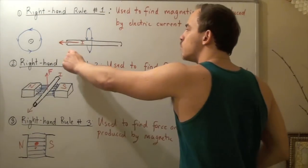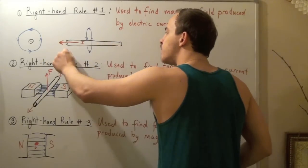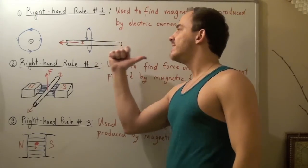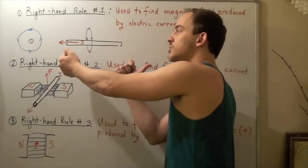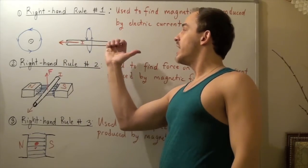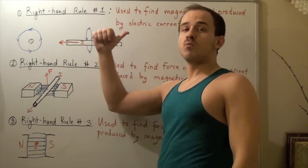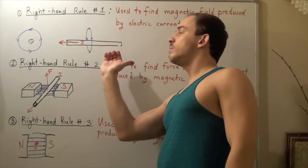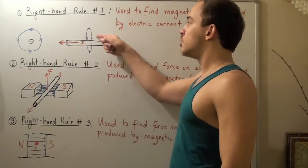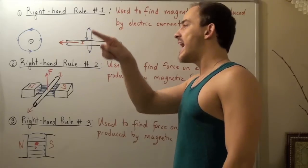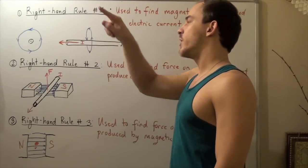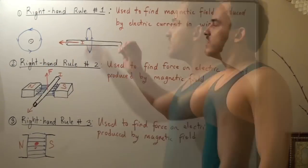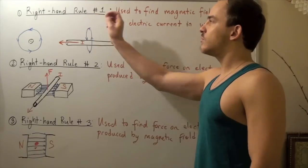Now suppose my current was going the opposite way. I take my right-hand rule and orient my thumb in the direction of my current — now pointing the other way. I grab my wire, and this is the motion that my magnetic field will make. The motion will be in the opposite or reverse direction to what we drew before. So instead of going this way, now my magnetic field will be going this way — and likewise in the other direction. That's how you use right-hand rule number one.